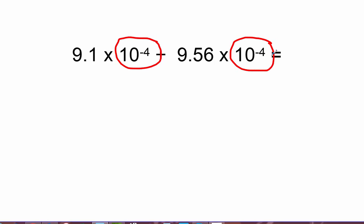So now I can just go ahead and deal with the digits. Here's my digits, and this time I'm doing an addition. Let's go ahead and add those numbers together. We've got the 9.1 plus 9.56, and we're going to add those numbers together. So we're going to bring down our 6, and 1 plus 5 is 6, and 9 plus 9 is 18.